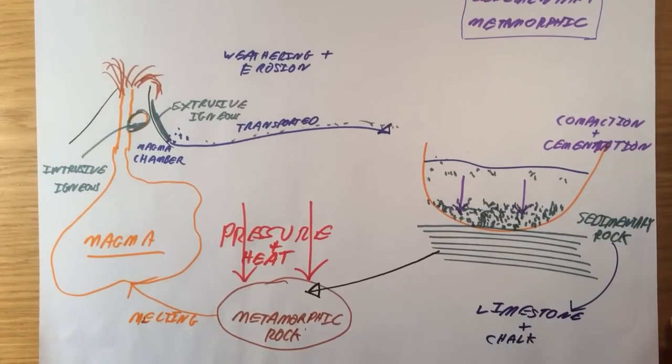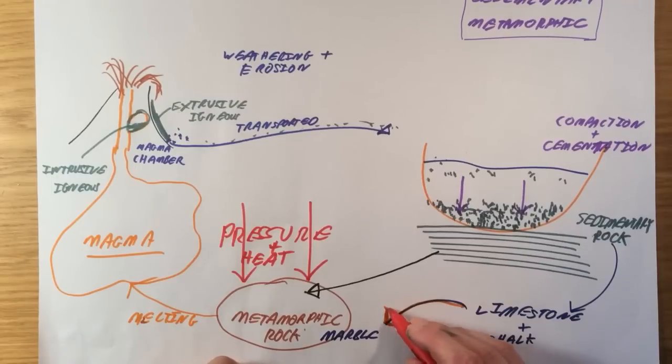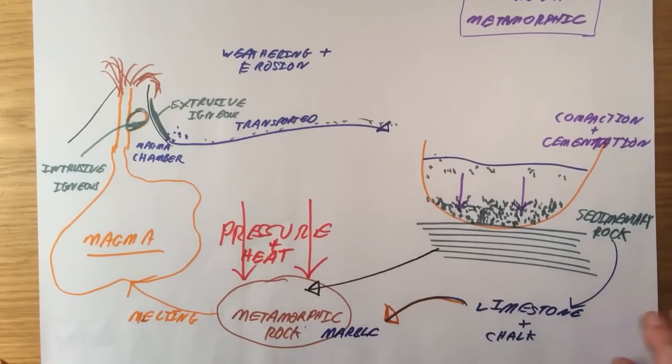Metamorphic rocks, any rock can form a metamorphic rock, but we get things like marble, which actually forms from limestone when it undergoes metamorphosis. We might have things like slate as well.